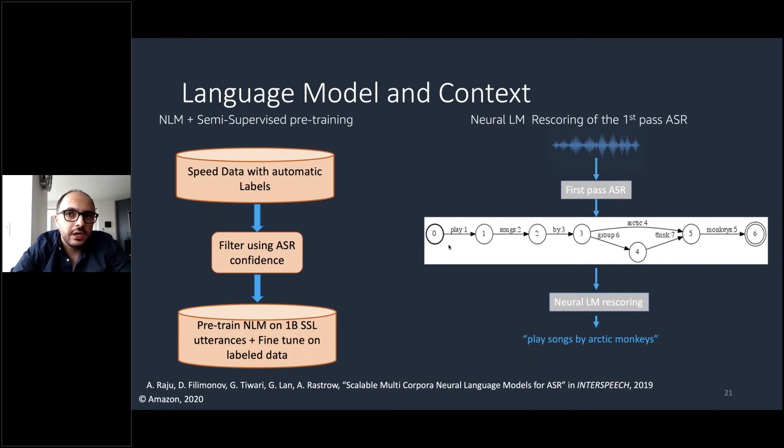Basically, we use roughly about one billion semi-supervised data from our production machine transcript data to pretrain our neural language models, and then we further fine-tune those on the labeled data, and then that's how we build a strong neural language model.